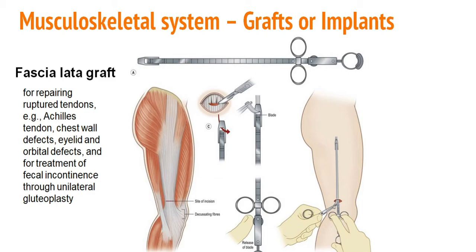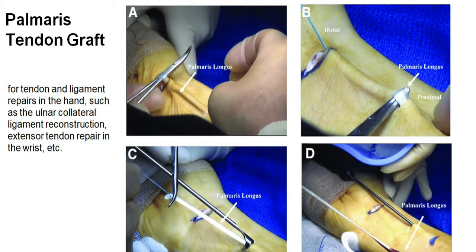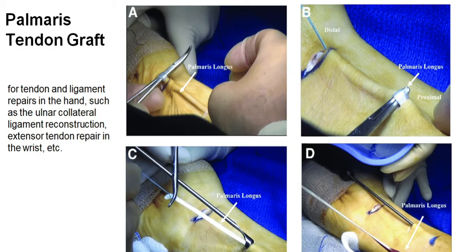These grafts are obtained for repairing ruptured tendons like the Achilles tendon, chest wall, eyelid, and orbital defects. They are also used for treatment of fecal incontinence through unilateral glutoplasty. Similarly, the physician will obtain a palmaris tendon graft by making an incision over the distal palm, using a sharp blade and performing blunt dissection to separate the tendon from tissue layers. The incision is extended longitudinally to obtain the desired length, then the physician sutures the incisions. These tendons are used for treating damaged ligaments like the ulnar collateral ligament, which connects bone and joints.